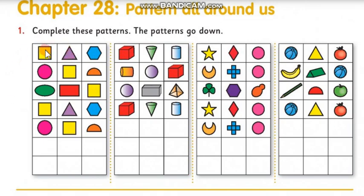If we look at this first row in our pattern, we have a yellow square and a purple triangle, then we have a blue hexagon. In the next row we have a purple circle.